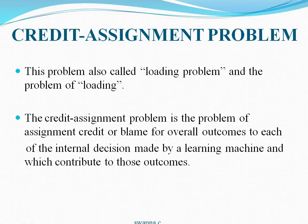The credit assignment problem is the problem of assigning credit or blame for overall outcomes to each of the internal decisions made by a learning machine which contribute to those outcomes. While a machine is learning to get the overall outcome, it will take some internal decisions. By using this credit assignment problem, we are assigning credit or blame for those internal decisions which contributed to get the overall outcome.